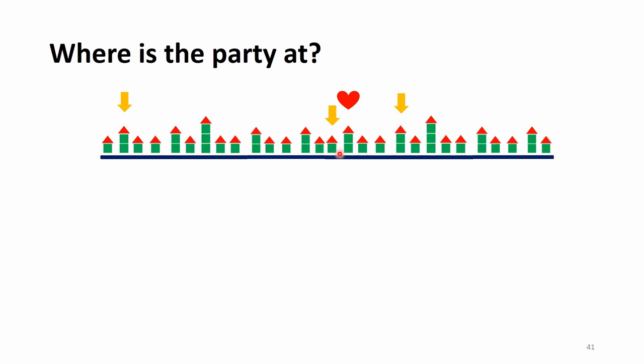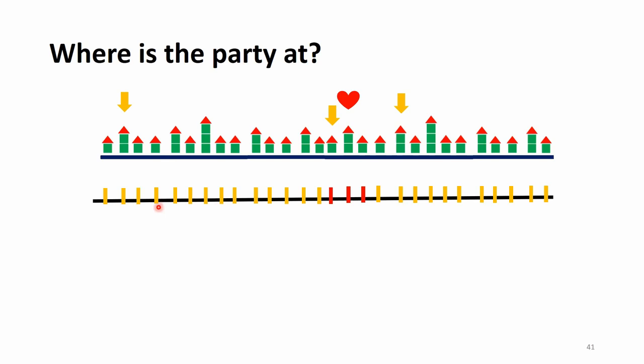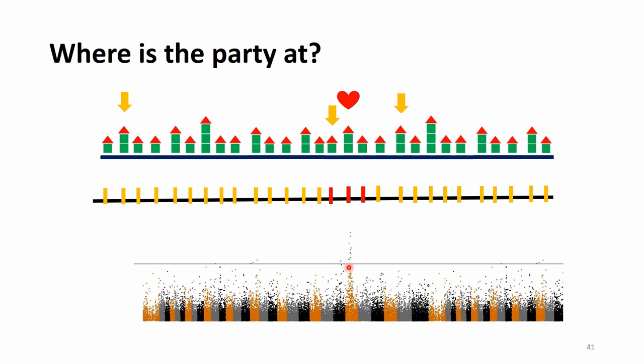The party should be in one of the neighboring houses. Of course, this story is just a comparison: the long street is the genome, and the houses are the markers on the genome. The party itself is some kind of a gene or genomic region affecting a trait you are interested in. While you generally don't know where those genes are located, if markers give a signal, they indicate parts of the genome where the underlying genes or genomic regions of interest reside.